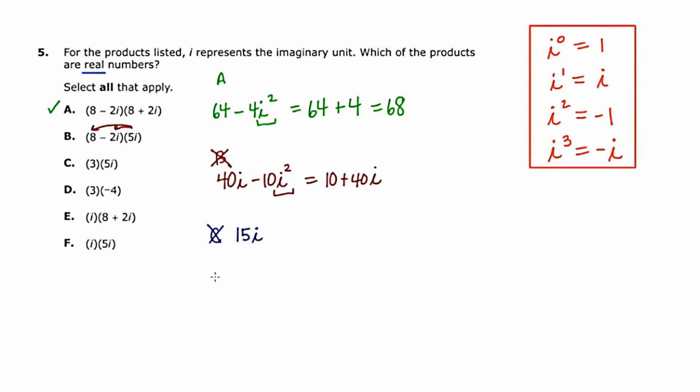Okay, let's go to d. Well, this is just negative 12. And negative 12, of course, is a real number, so that's going to get a check.